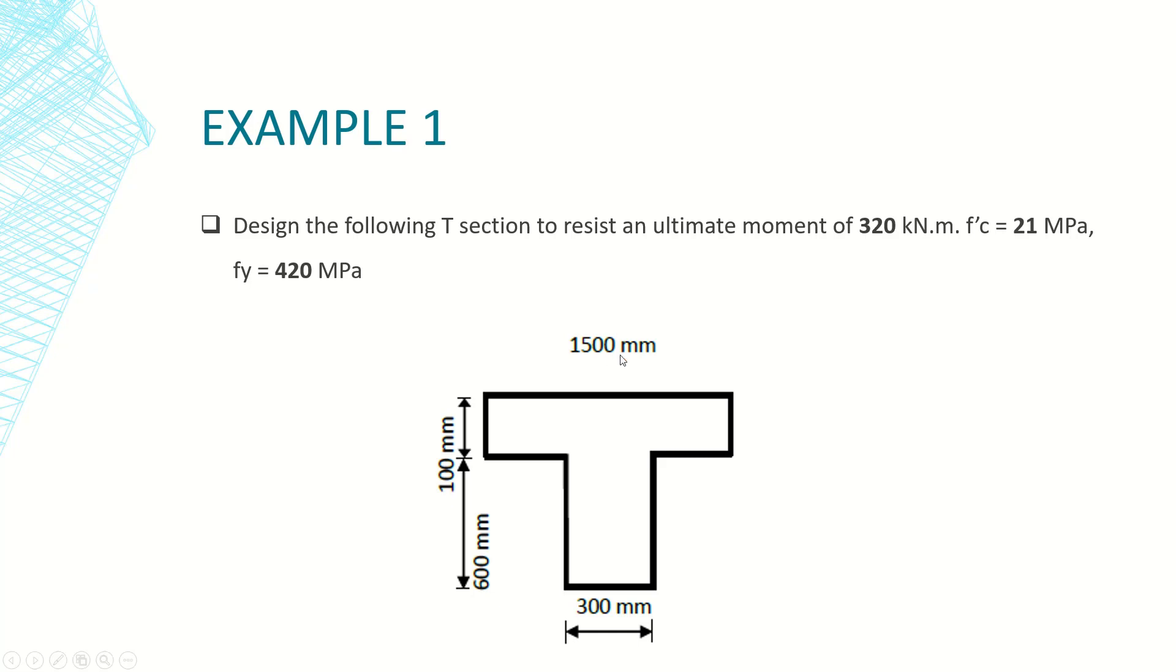we mean that the effective width of beam in the compression zone will be 1200. Actually this is 1200 and not 1500. I'll correct it and upload the correct file. This is 1200 millimeters, so this will be bf, b flange, the effective width of the beam.